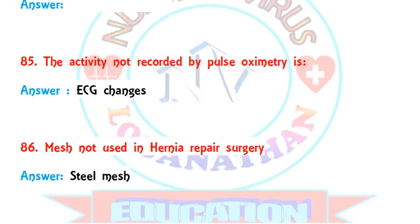Question 85: the activity not recorded by the pulse oximeter. They gave four options including SpO2 and respiration rate. The answer is ECG changes — ECG readings cannot be measured by the pulse oximeter.